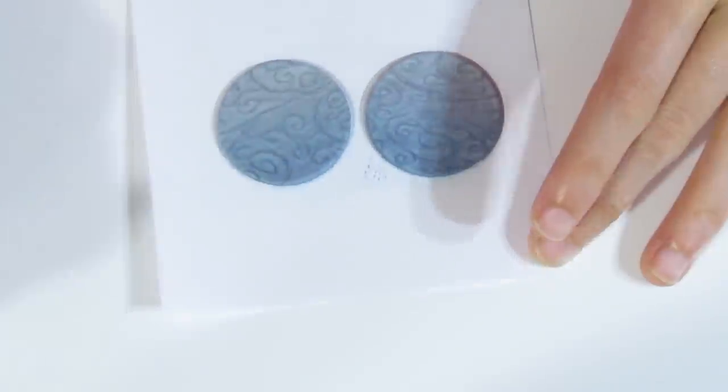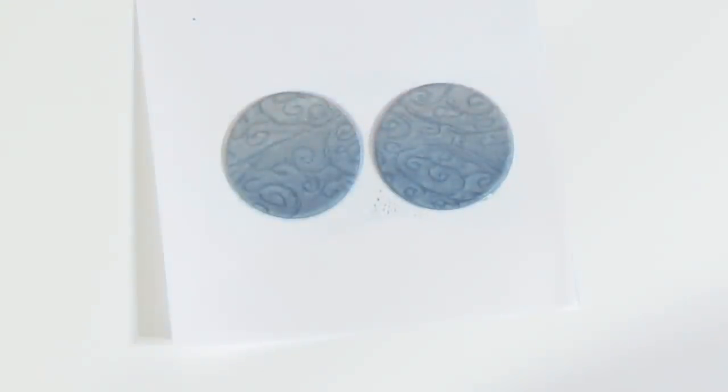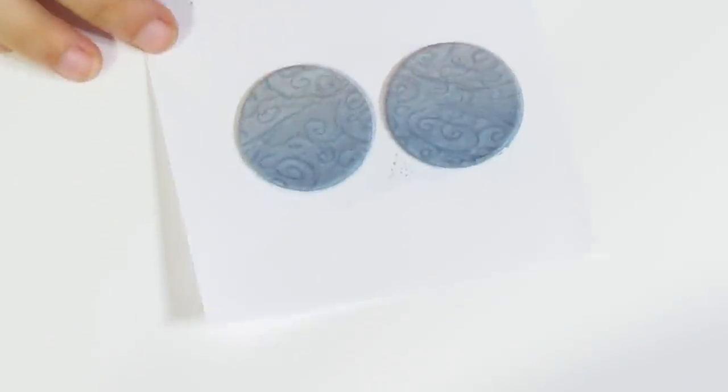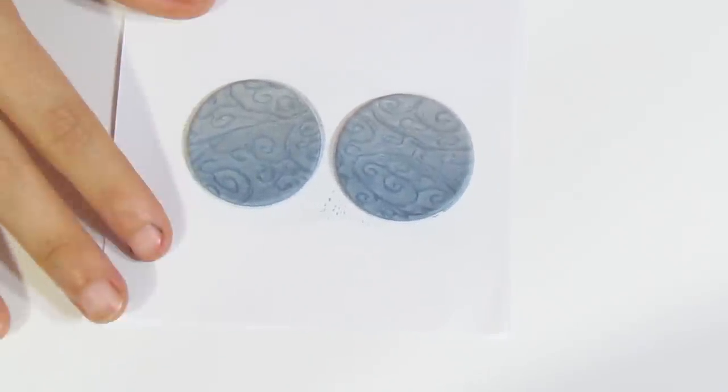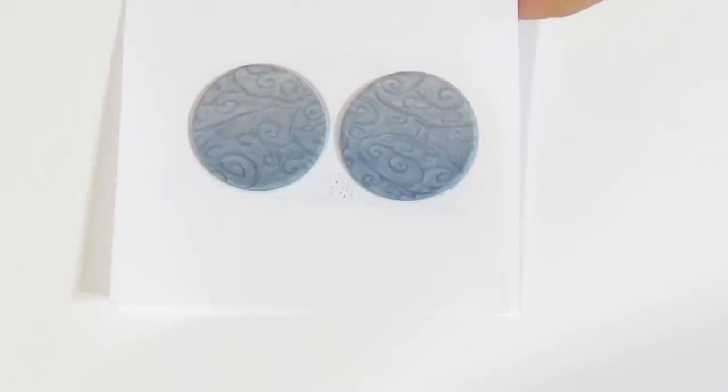There we go. I'm just going to lift that up. We're going to bake it just like that. You don't need to lift it off the paper—it's in the right position as it is now. Just bake that, and then when they're done we can apply our image transfers.